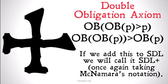That's the double obligation axiom. If we add this axiom to SDL, we're going to call it SDL+, or standard deontic logic plus — taking McNamara's notation. Check out his fantastic and extensive article in the Stanford Encyclopedia of Philosophy for more information.